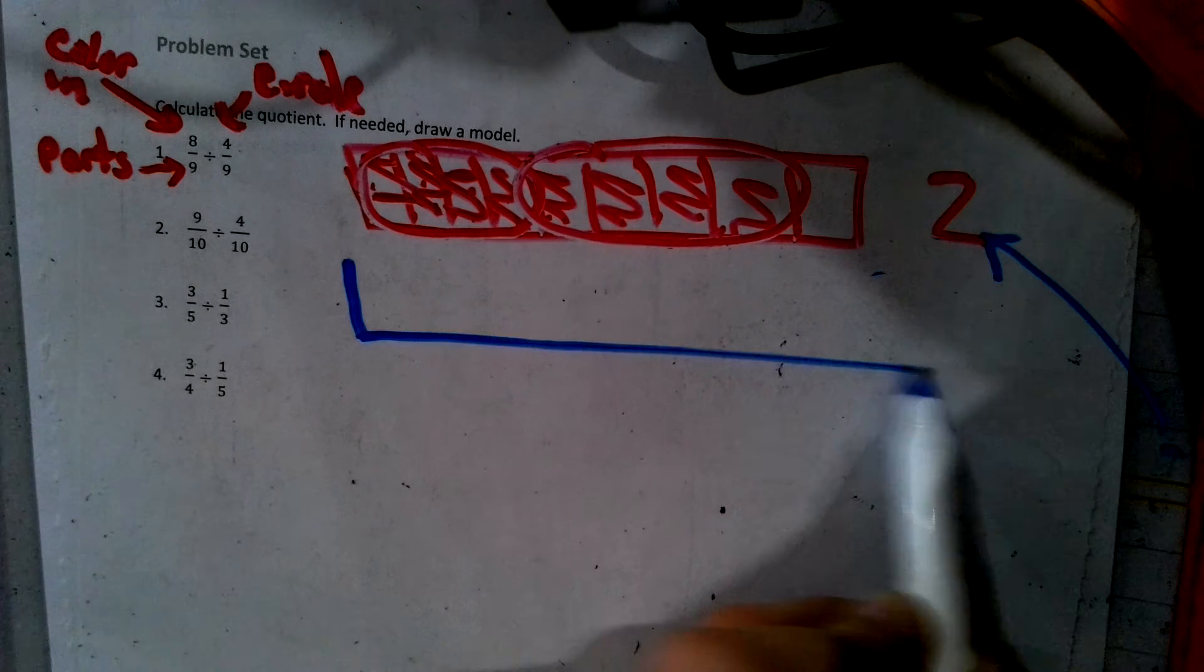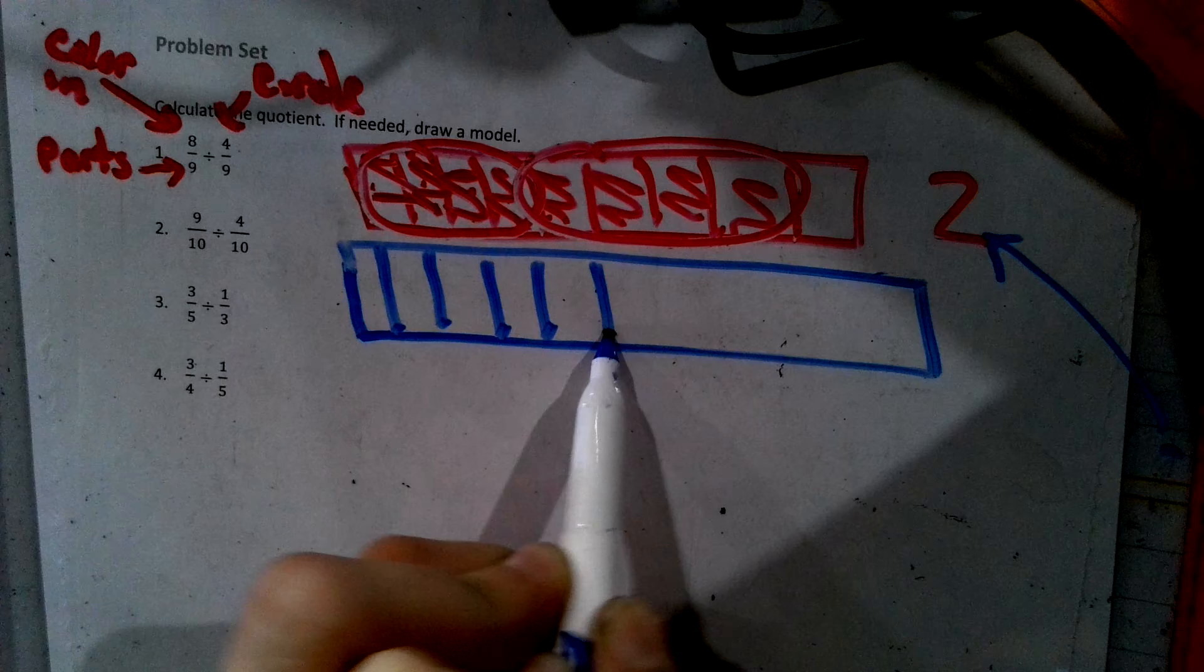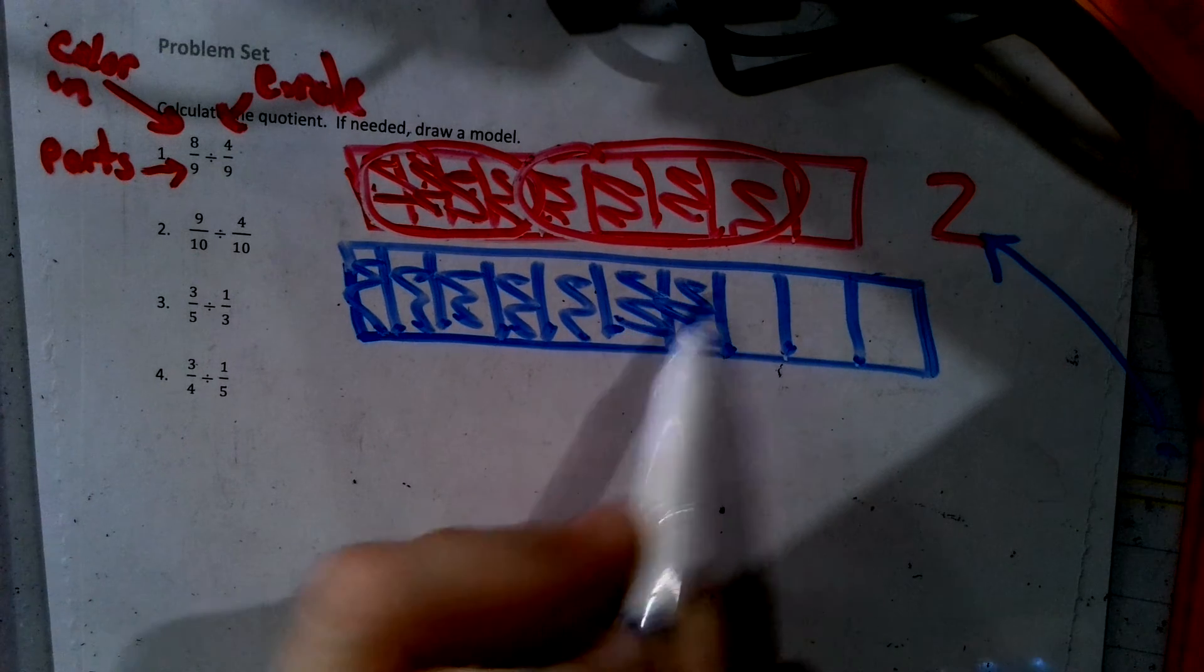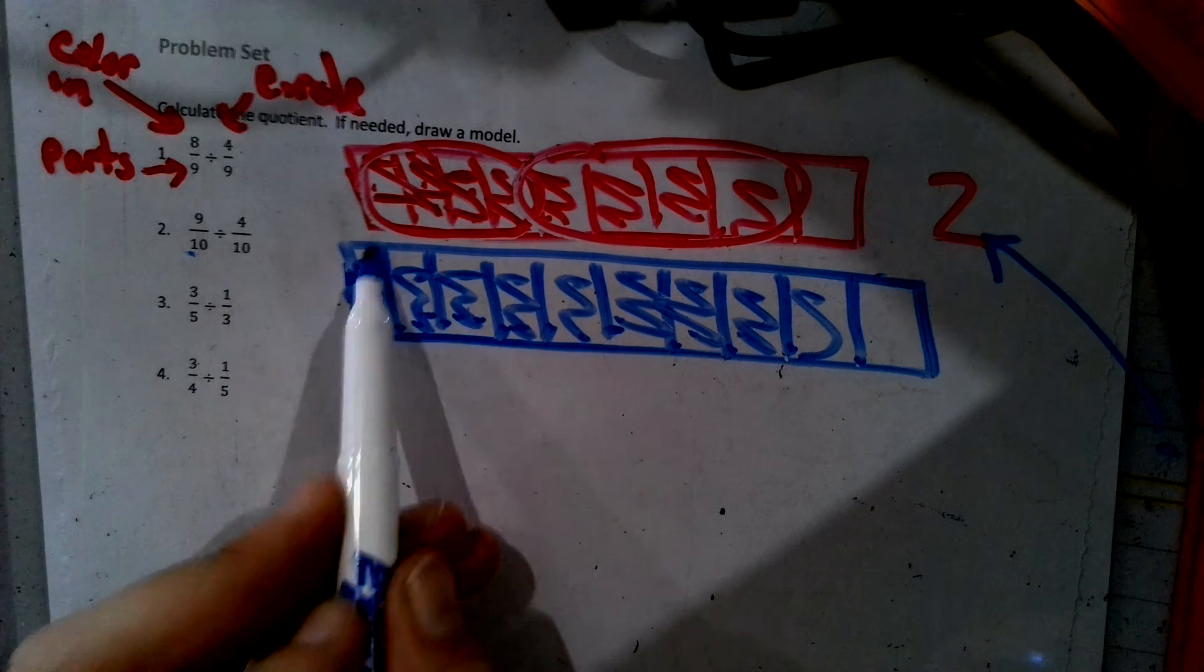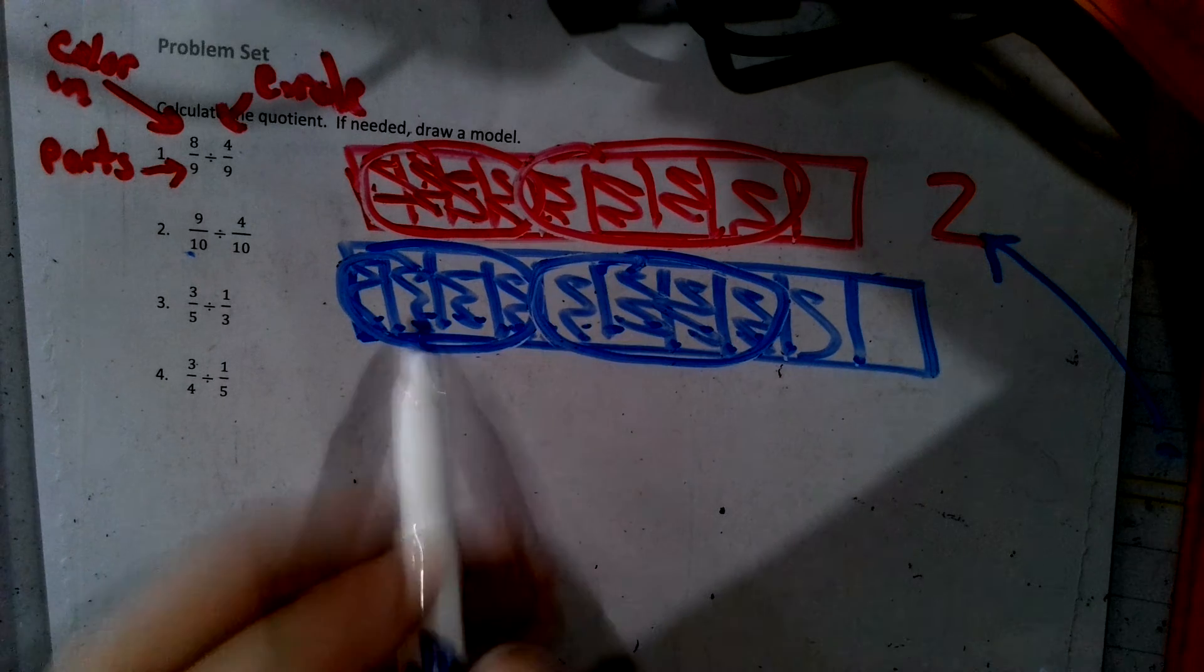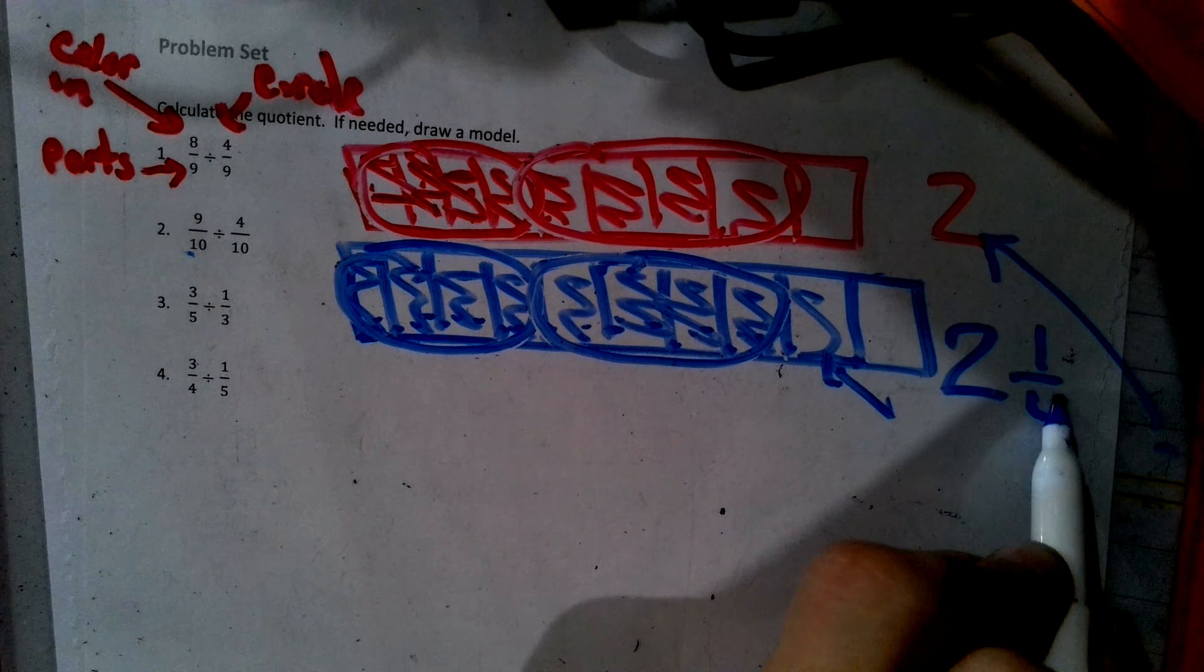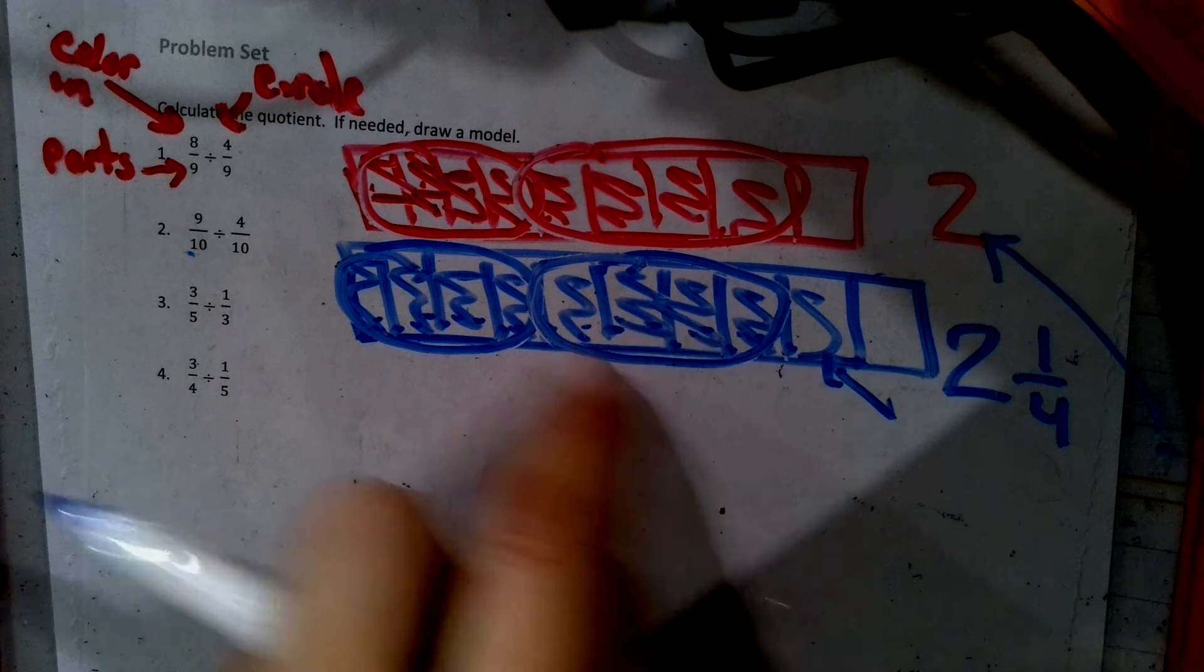Number two is tape diagrams. They have the same bottom. So I have to make sets of 10. One, two, three, four, five, six, seven, eight, nine, 10. I have to color in nine of them. Remember, set to 10, color in nine, circle four. One, two, three, four. One, two, three, four. So I circled two big groups, but I have one left over. And how many are in a circle? Four. Denominator is always how many are in the circle, or in the oval.